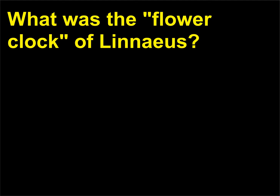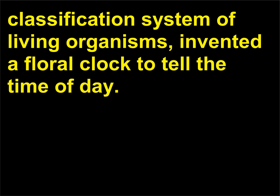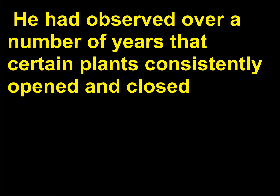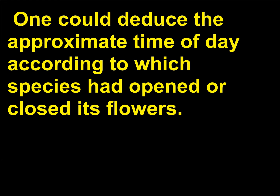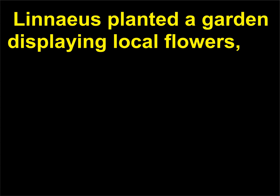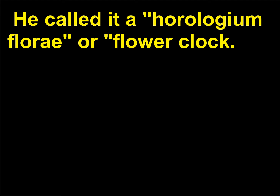What was the flower clock of Linnaeus? Linnaeus, famous for his classification system of living organisms, invented a floral clock to tell the time of day. He had observed over a number of years that certain plants consistently opened and closed their flowers at particular times of the day, and these times varied from species to species. One could deduce the approximate time of day according to which species had opened or closed its flowers. Linnaeus planted a garden displaying local flowers arranged in sequence of flowering throughout the day, calling it a horologium florii, or flower clock.